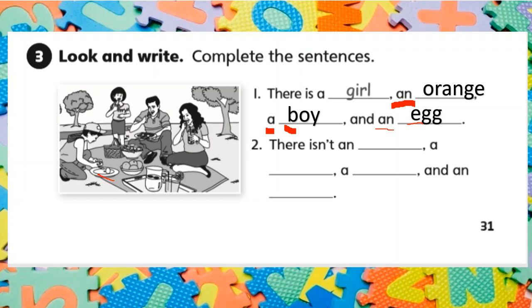Number two says, there isn't an. Ahora vamos a escribir cosas que no hay. For example, there isn't an apple. There isn't an apple in the picture. No hay una manzana en la fotografía. There isn't an apple, a cookie, a chicken, and an eraser. ¿Qué más se les ocurre que no hay en la fotografía?